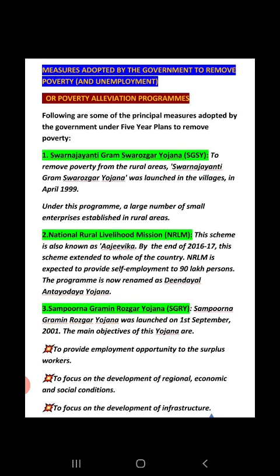The second Poverty Alleviation Program was the National Rural Livelihood Mission — NRLM. This mission is also known as Ajivika. By the end of 2016-17, NRLM had been launched almost across the entire country. This program is now renamed as Deen Dayal Antyodaya Yojana.